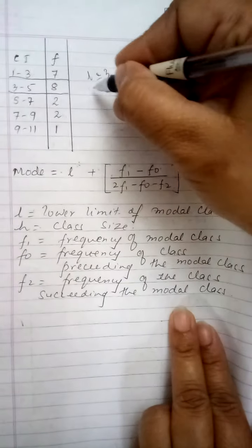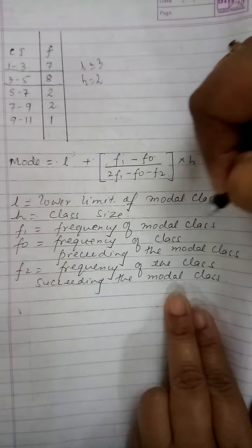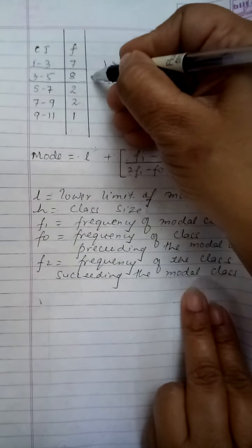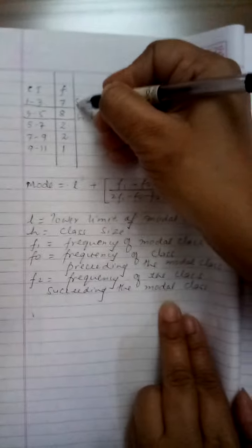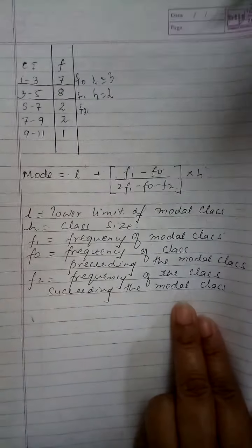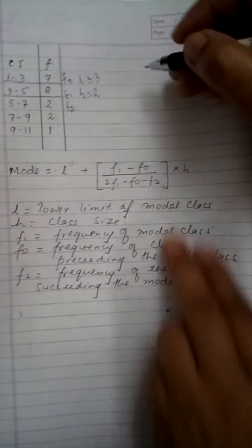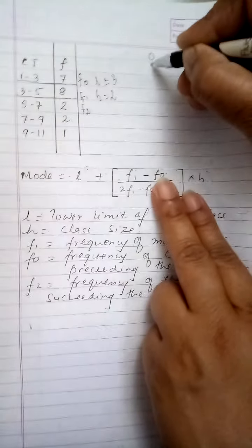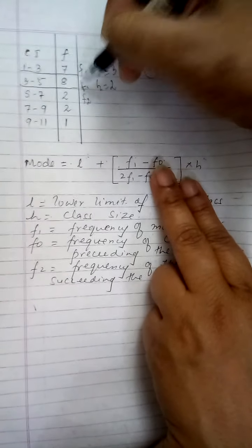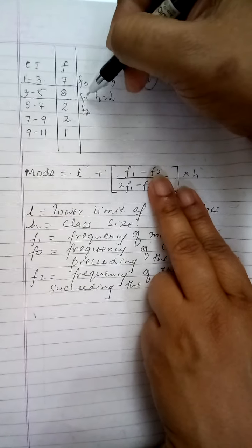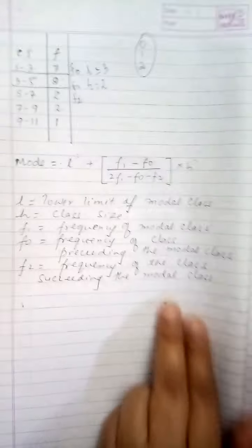Next f1. Now f1 is the frequency of the modal class, so this was the modal class, f1 becomes this frequency. f0 is the frequency of the class preceding the modal class so this becomes f0 and this becomes f2. Now an easier way of remembering this, otherwise it's very confusing to remember preceding class succeeding class, the easier way of remembering it: when you write numbers and count, when you start counting numbers how do we write them? We write them as 0, 1, 2 and so on. So I'm going to apply the same logic over here. Once I find out my modal class, above it I write f0, the modal class I write as f1, and below it I write f2. So my f0 becomes 7, f1 becomes 8, and f2 becomes 2.